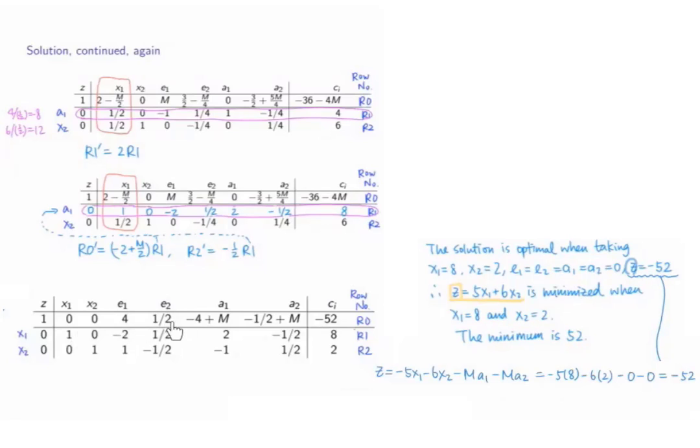There is no more negative coefficients for the variables in row 0. If we take x1 equals 8, x2 equals 2, e1, e2, a1, and a2 to be 0 and z equals negative 52, the solution is optimal. This means that when we treat z to be negative 5x1 minus 6x2 minus M times a1 minus M times a2, we get the maximum value of negative 52 for this case.